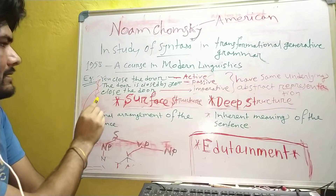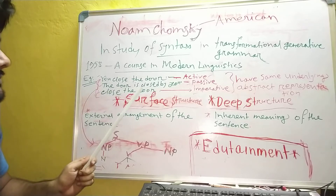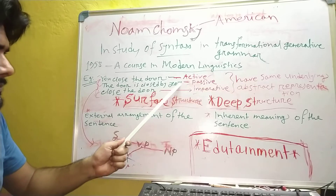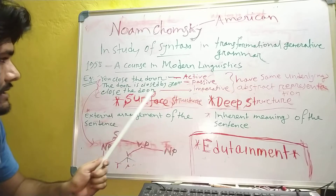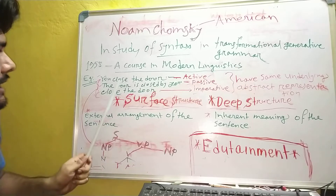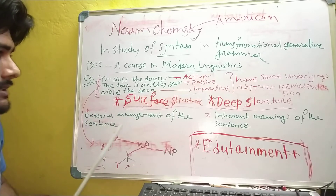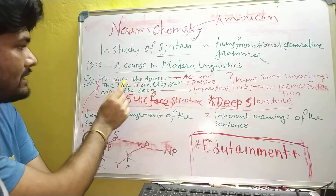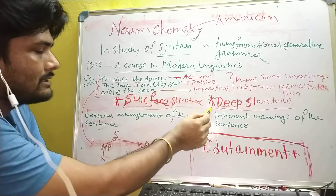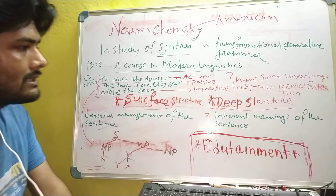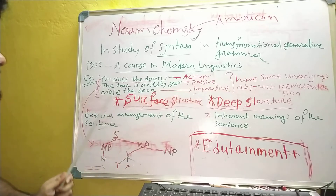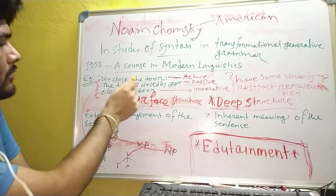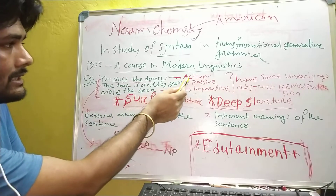All three sentences are given surface structures of the same category — active, passive, imperative, whatever it may be. But they are in the same category with the same deep structure and they are going to give the same meaning. Surface structure is the external arrangement, and deep structure, when we divide all the materials, gives the same syntactical arrangement for these examples. They are in the same group — only their outward format is changed: one is active, one is passive, one is imperative.